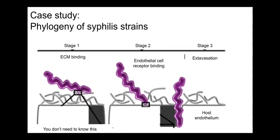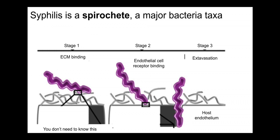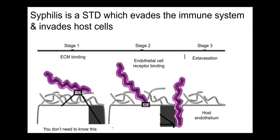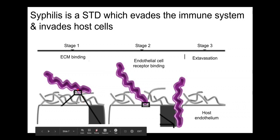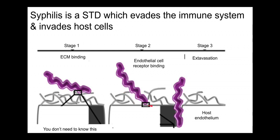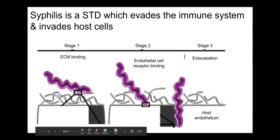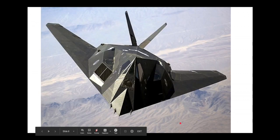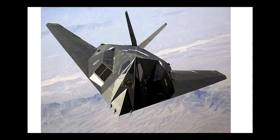As a case study, we'll talk about syphilis. Syphilis is a spirochete — a major bacterial taxon. It's an STD that evades the immune system and host cells: it first attaches to the extracellular membrane, makes contact with the cellular membrane, and then invades between cells. It's often called the stealth pathogen for its ability to evade the immune system.